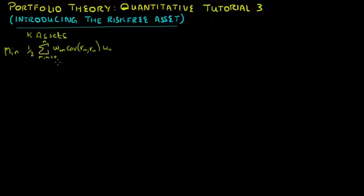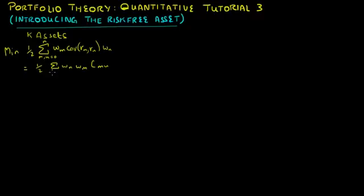Notice that m and n go from 0 to k, as opposed to 1 to k, because we have introduced a risk-free asset in our portfolio, where W0 corresponds to the weight of the risk-free asset. Since the risk-free rate of return is assumed to be constant, its variance as well as its covariance with risky assets will be 0. So we can rewrite the objective function as half times the variance of the portfolio with risky assets, where m and n go from 1 to k, and cmn denotes the covariance between the mth and nth asset.